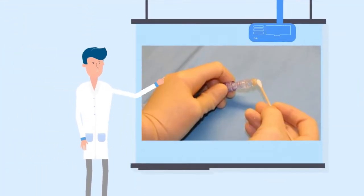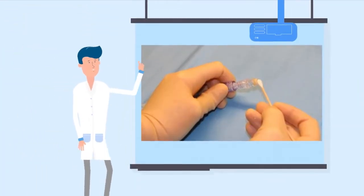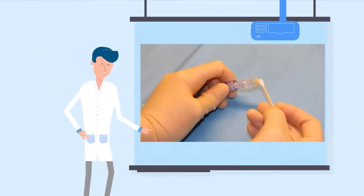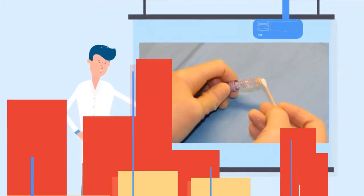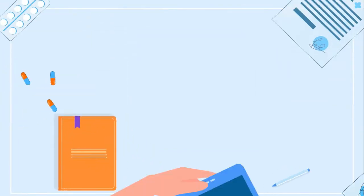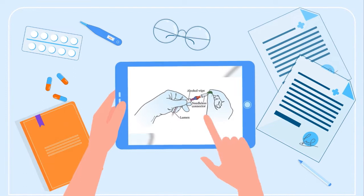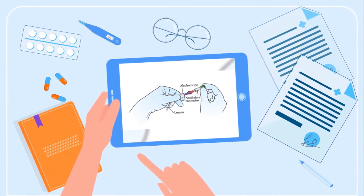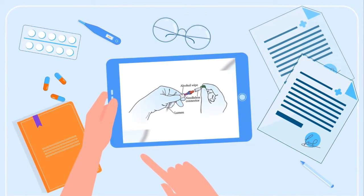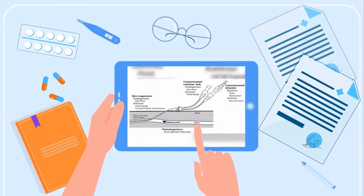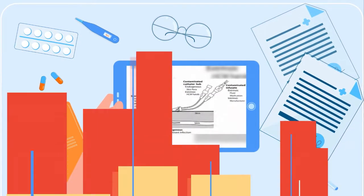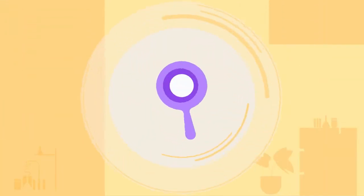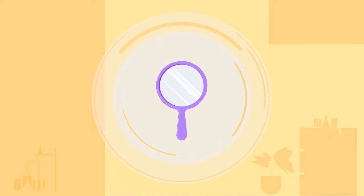Second, contamination of the catheter hub. The catheter hub is the point where the central line connects to other tubing and devices. This critical junction must be kept clean at all times. This area can become contaminated if it is not cleaned properly, or if it becomes wet or loose. Regular checks and maintenance are essential to prevent this type of contamination.